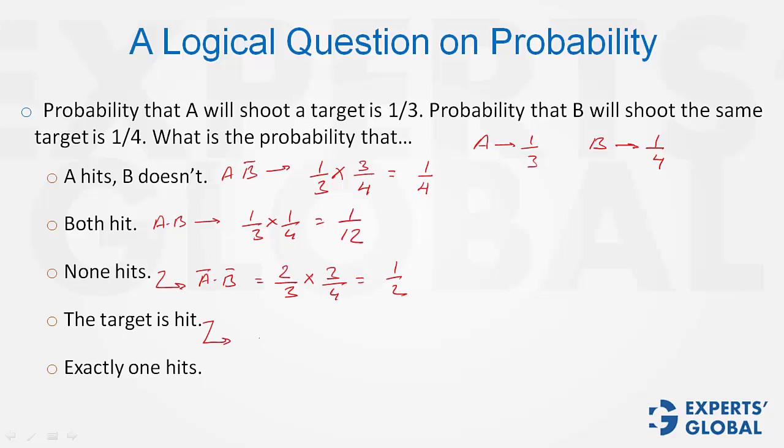The target is hit. Either you add three probabilities of A hitting, B not hitting, plus A not hitting, B hitting, plus both hitting, or a better way would be 1 minus neither hitting. So this would be 1 minus A bar is 2 by 3, B bar is 3 by 4. 1 minus half, the answer is half.